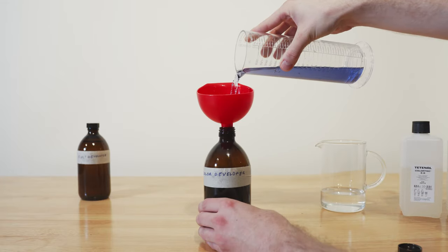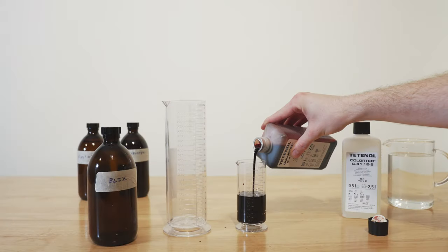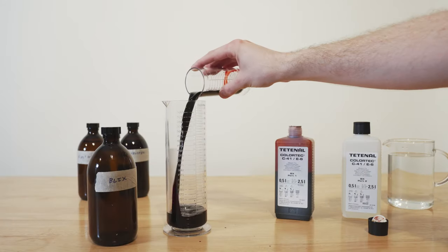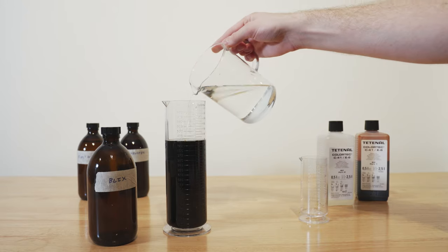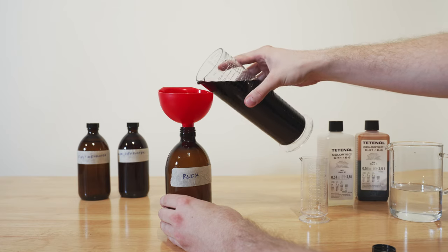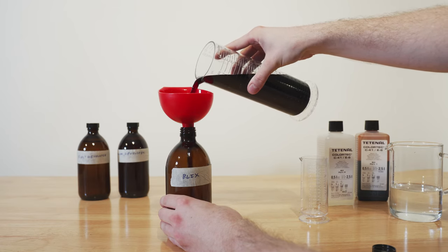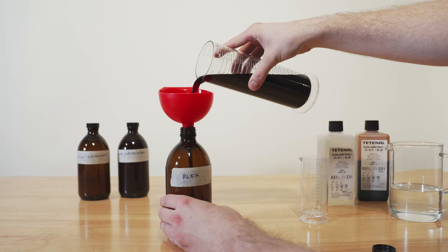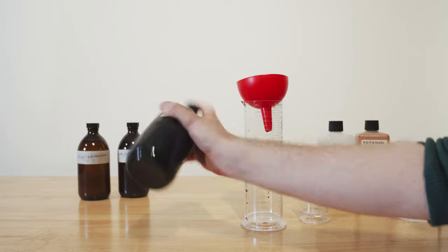Now the color developer is mixed, we just pour it into our storage bottle and set it aside. Mixing the blix is the same as the color developer—it's a two-part solution, 100ml of each part into the final solution. One thing to note about the blix is that it's a bleaching fix solution and it contains bleach. The bleach will stain anything it touches, particularly clothes, so make sure you're ready with a rag to wipe up any drops or spills.